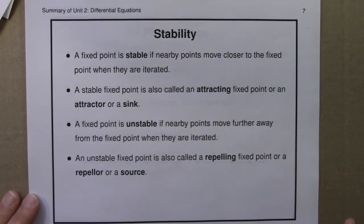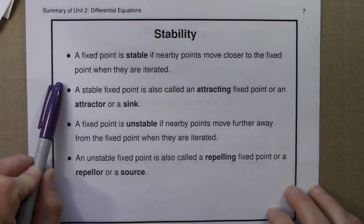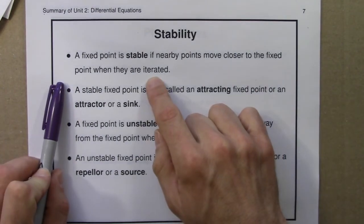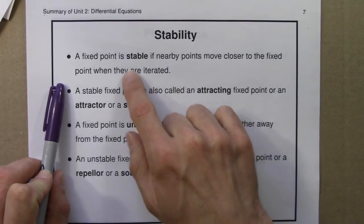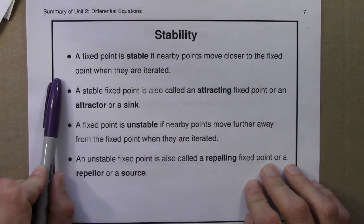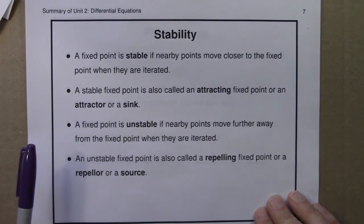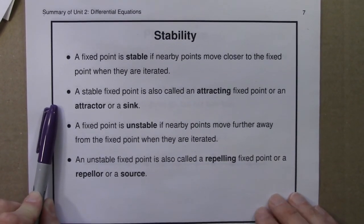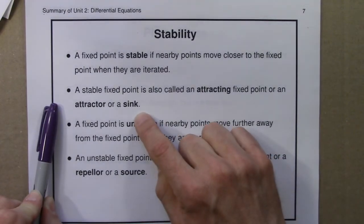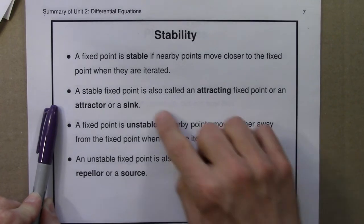Fixed points have stability as well. They can be stable or unstable. A fixed point is stable if nearby points move closer to the fixed point when iterated, or perhaps I should say if you have an initial condition near the fixed point and you solve the differential equation, it moves closer to the fixed point. A stable fixed point is also called an attracting fixed point or an attractor, or in differential equations, it's sometimes called a sink. Because you can imagine a lot of solutions all head into this one point, so it looks like water going down a drain.